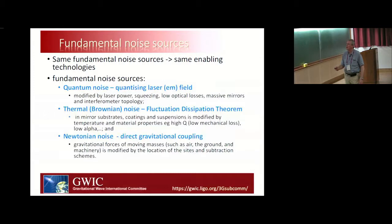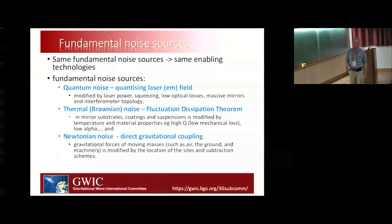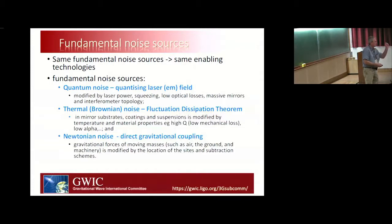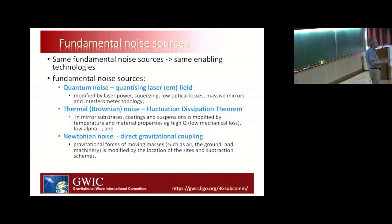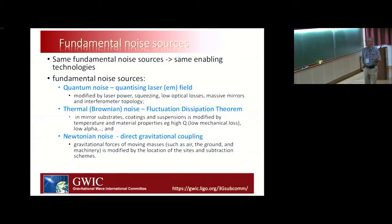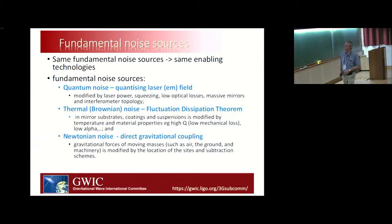The fundamental noise sources are the same if you're building a laser interferometer. As Rana pointed out: it's quantum noise. Quantize the laser field and you get fluctuations in phase and amplitude. Phase fluctuations mean you can't resolve phase within a certain limit — that gives you the photon counting error. Amplitude fluctuations beating with the carrier laser exert random forces on your mirrors, masking the gravitational wave signal. To address this we want to modify laser power, use squeezing, and use really low-loss optical components.